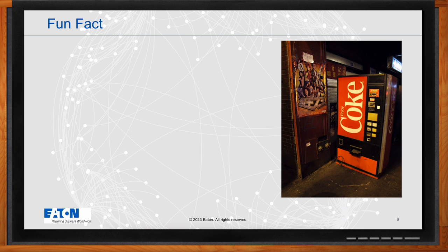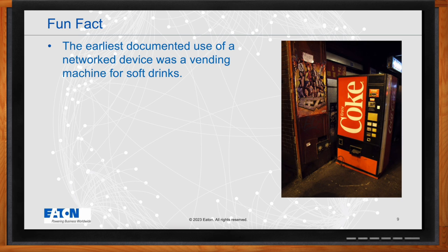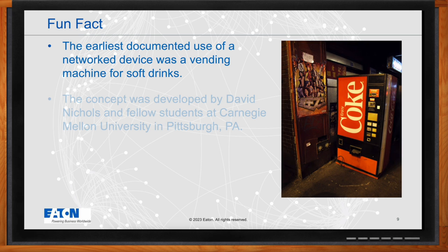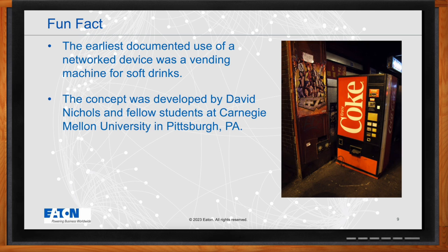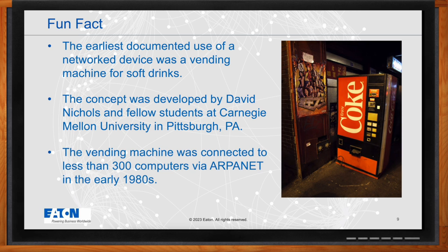A fun fact: the initial use of a networked device was a soft drink vending machine conceptualized by David Nicholas, a graduate student at Carnegie Mellon University in Pittsburgh, Pennsylvania. Along with fellow students, Nicholas devised a way to determine the availability of soda cans in the vending machine before making the long walk to its location. They used ARPANET to network the vending machine, granting access to around 300 computers.